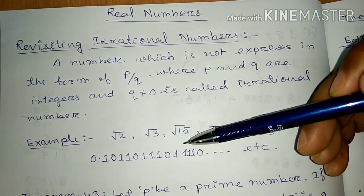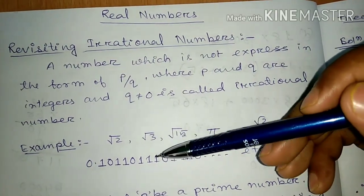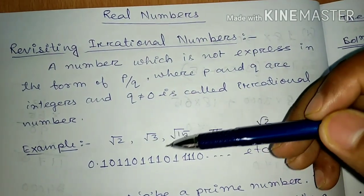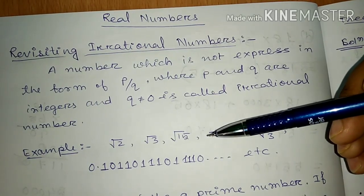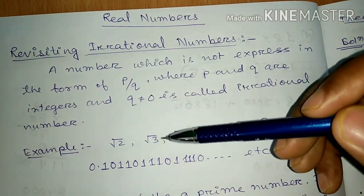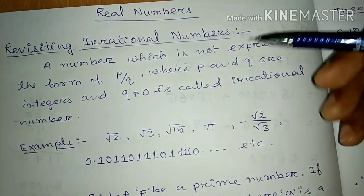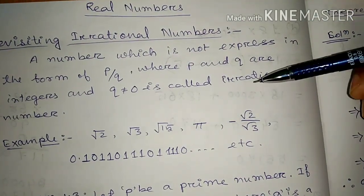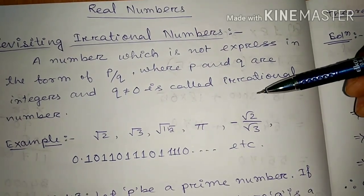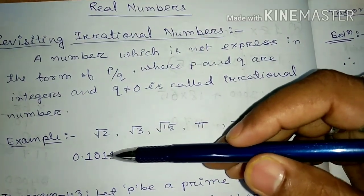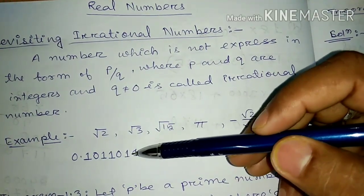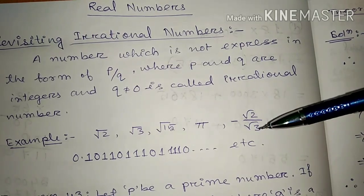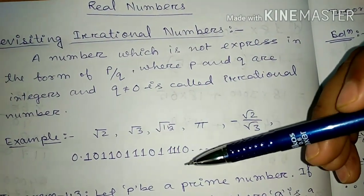For example, root 2, root 3, root 15 — we cannot express these in P by Q form. In root form, all prime numbers are irrational. Some composite numbers are also irrational. Pi is also an irrational number. Root 3 by root 3 is also irrational. And 0.10110111... where one more 1 is added at every step — these are all examples of irrational numbers.